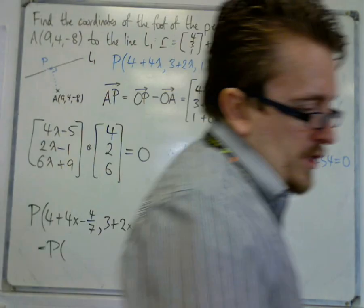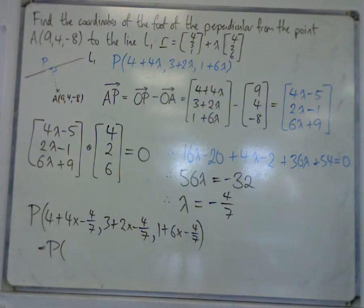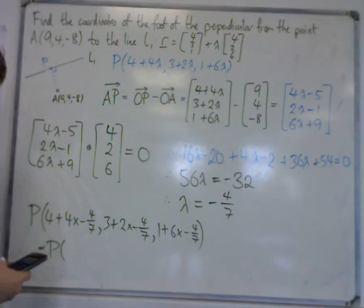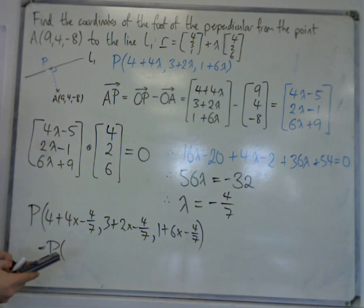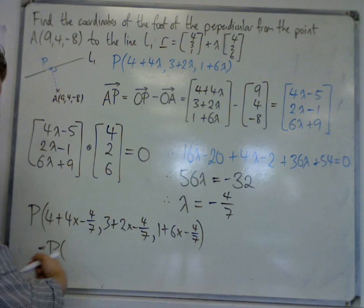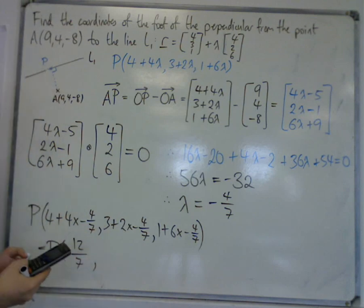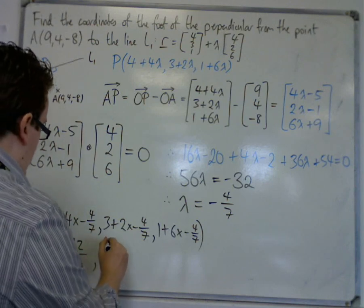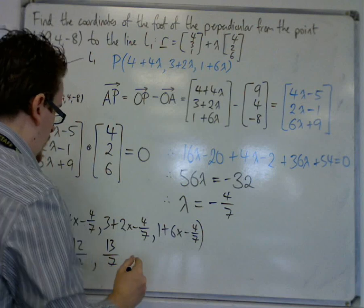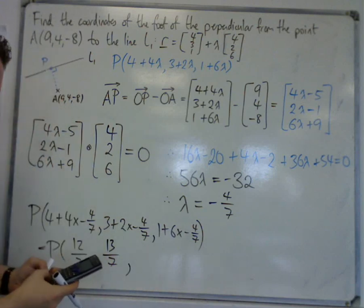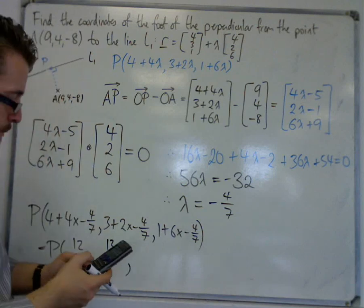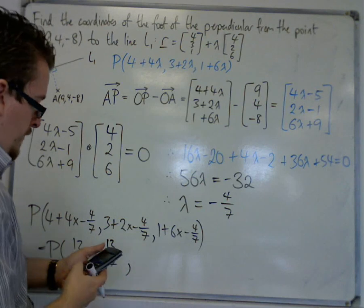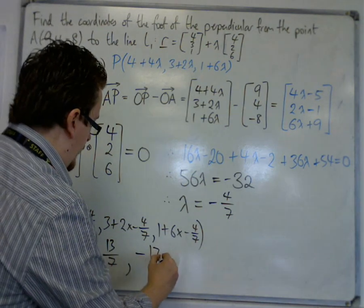So P has the coordinates: I'll take away 4 times 4 times 4 over sevenths, that's 12 sevenths. So 3 plus 2 times minus 4 sevenths is 13 sevenths, and 1 plus 6 times minus 4 sevenths is minus 17 over 7.